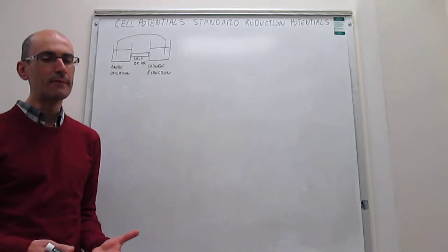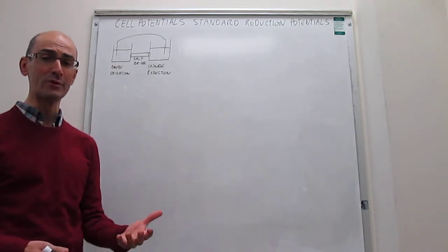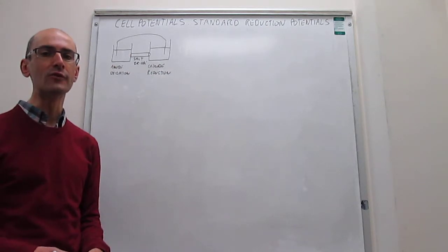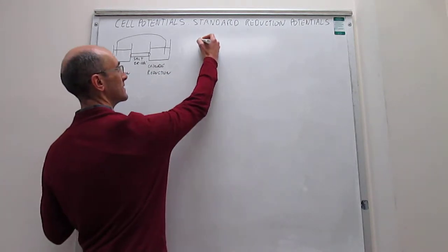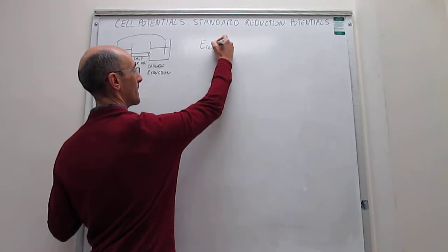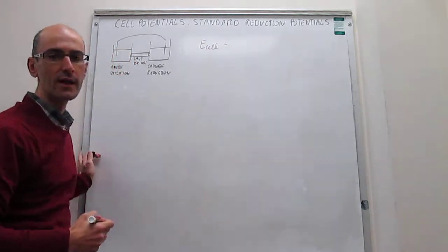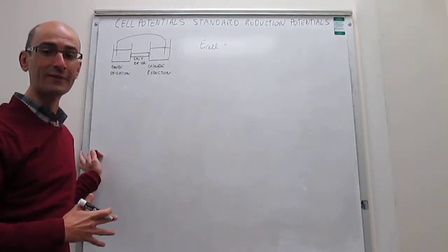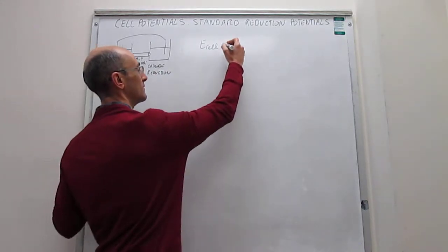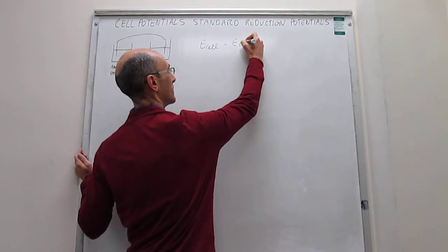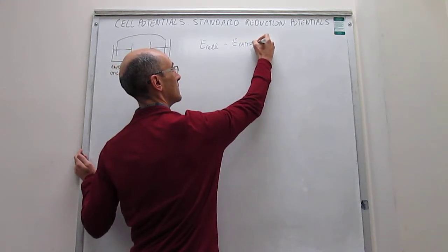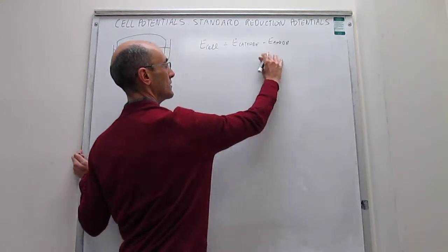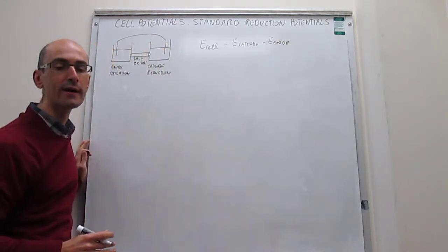The idea is that we would like to predict the potential of a cell in a simple way. The cell potential can be written as a combination of the potentials of the half-reactions: E_cell = E_cathode minus E_anode.